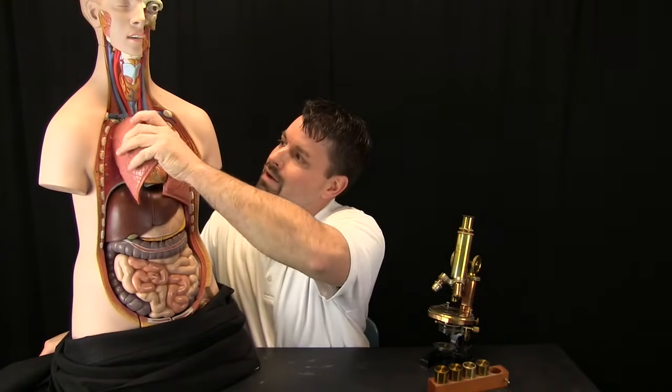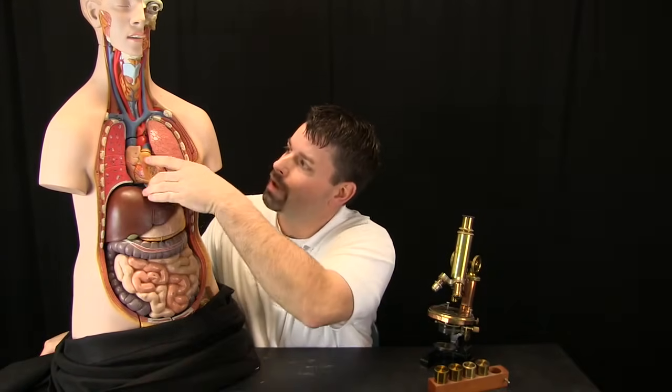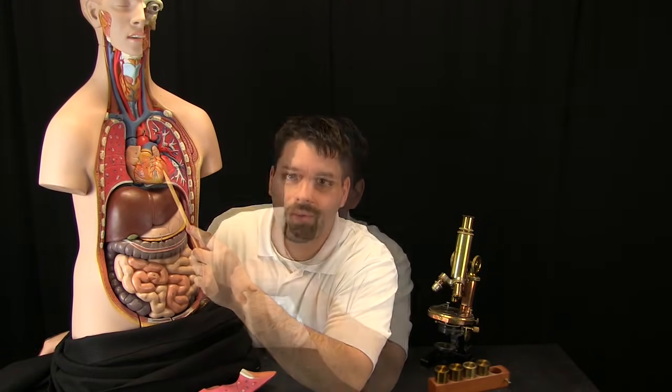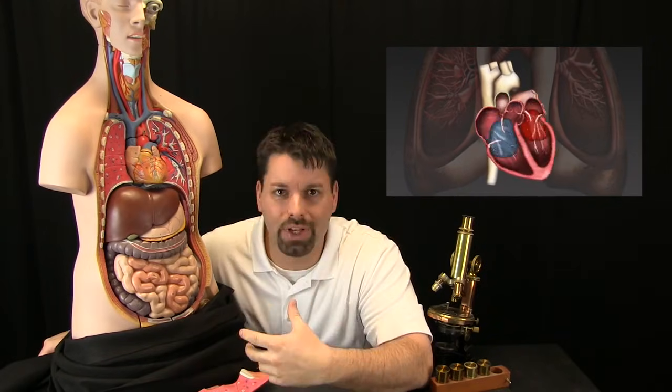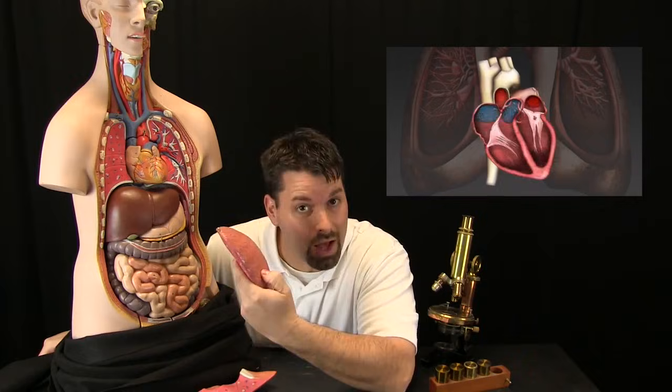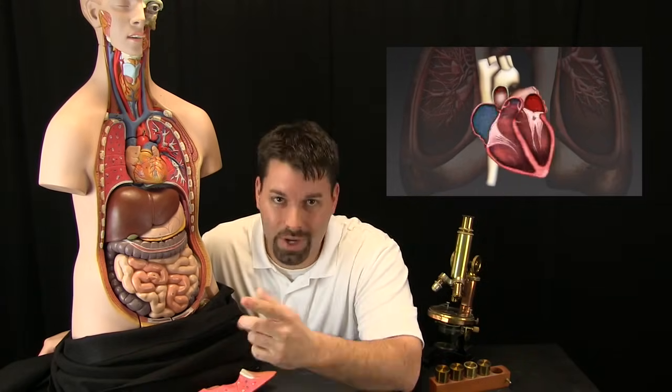But how does that oxygen in the blood get to all of our different cells? Well, take a look at this. We can pull off the lungs and we find something right here. This organ is a heart. It is about the same size as a closed fist. And what is its job? Well, this organ is a pump. And it pumps blood to all the cells in our body. And that blood has oxygen and food. The oxygen comes from the lungs. But where does the food come from?